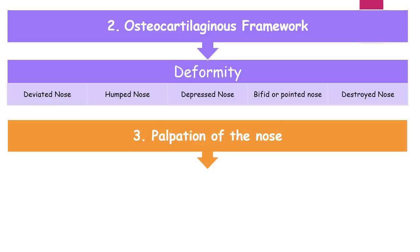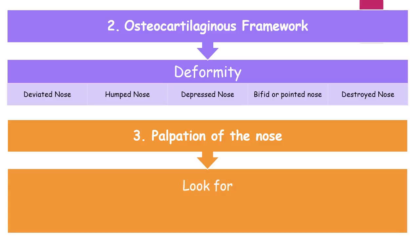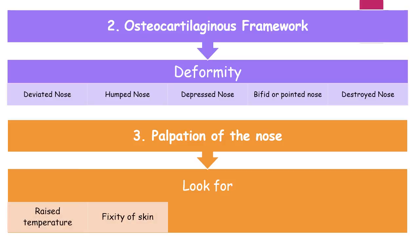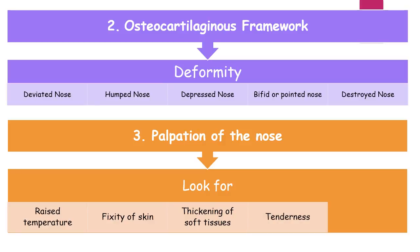Palpation of the nose: the nose needs to be palpated for the following points — number 1: raised temperature; number 2: fixity of skin; number 3: thickening of soft tissues; number 4: tenderness; and number 5: fluctuations or crepitations. A printable version of this slide is given down below — do print it and read for further information.